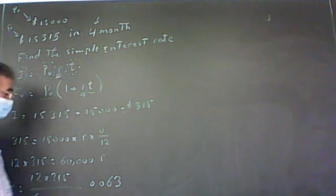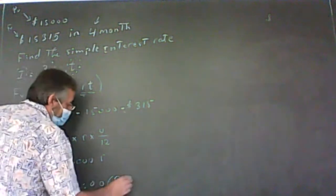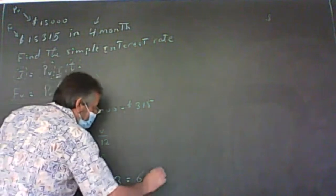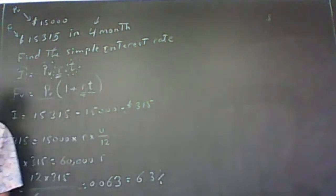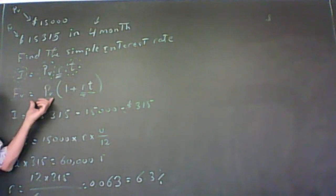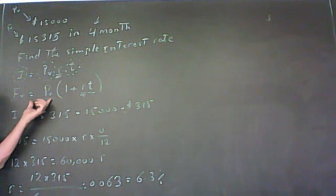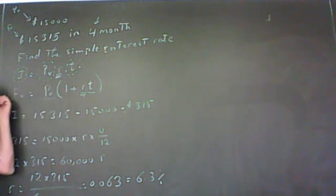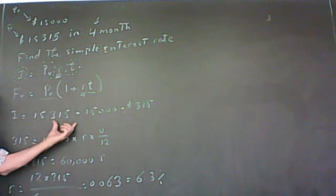R will come out in decimal form, giving 0.063. If you want to change it to percent, that's 6.3%. Notice that if you use the FV formula directly, it's not going to be any different — you just skip one step, but you end up doing the same subtraction.